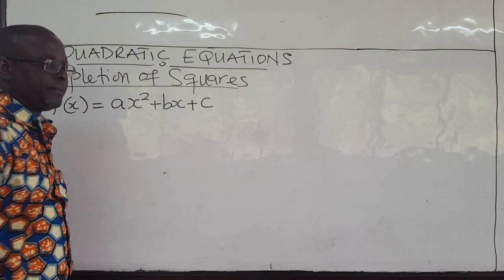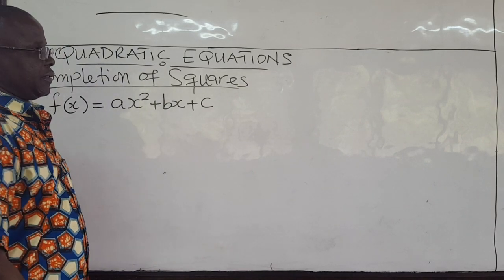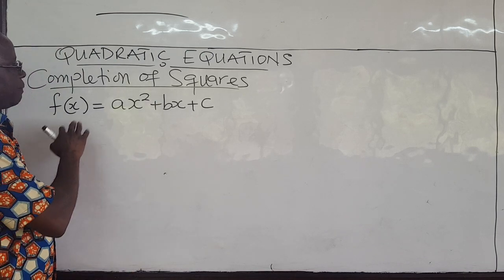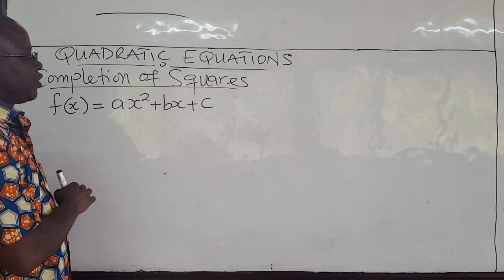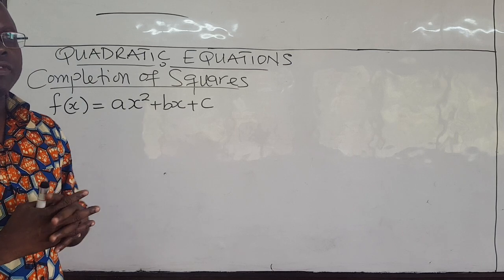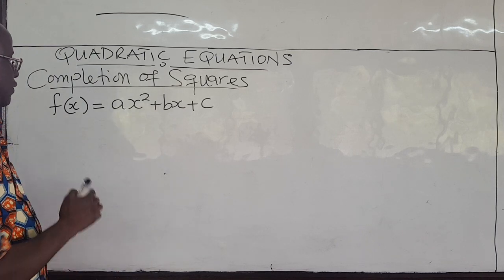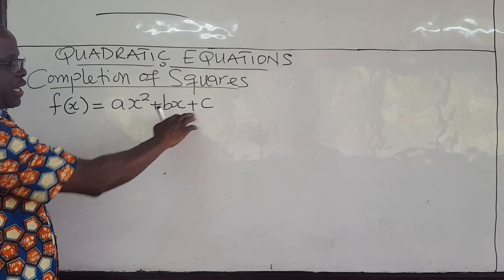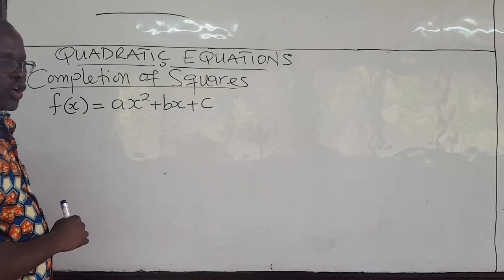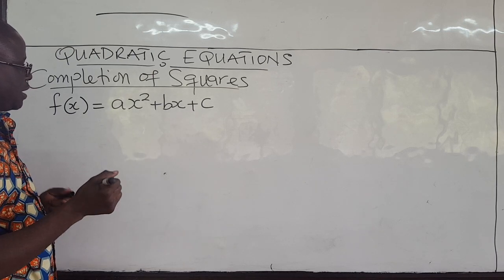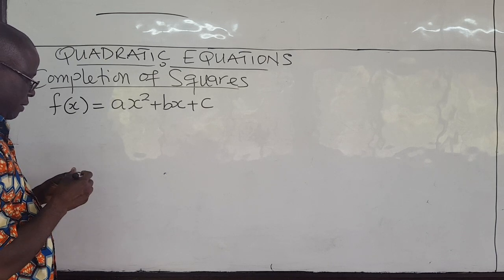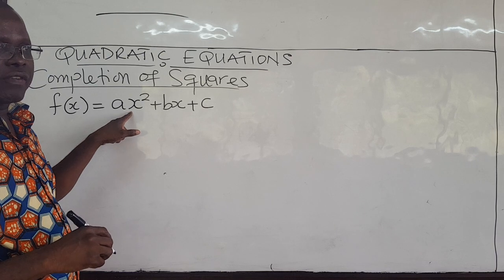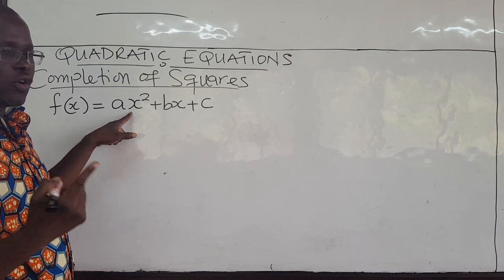Hello guys. In this series of videos, we'll start looking at quadratic equations and how to complete the square of a quadratic equation. Given a quadratic function ax squared plus bx plus c, to complete the square, you want the coefficient of x squared to be 1 before you start completing the square.